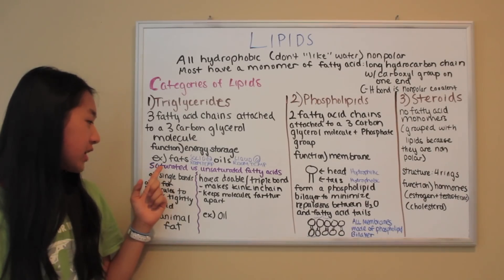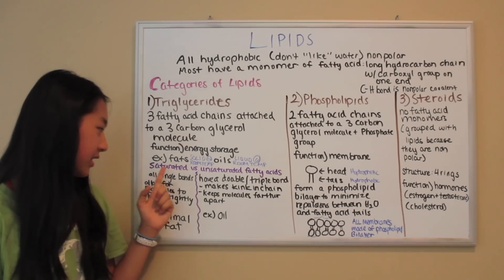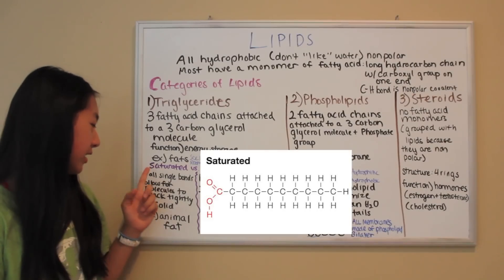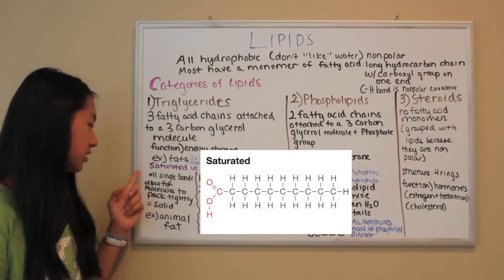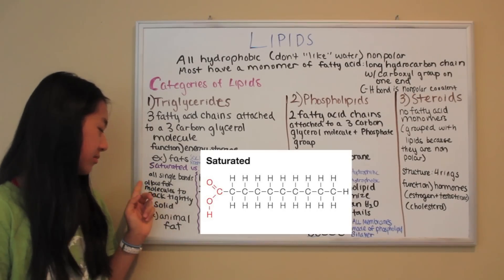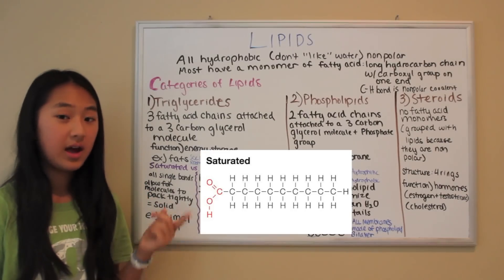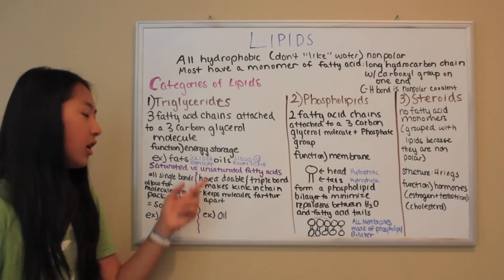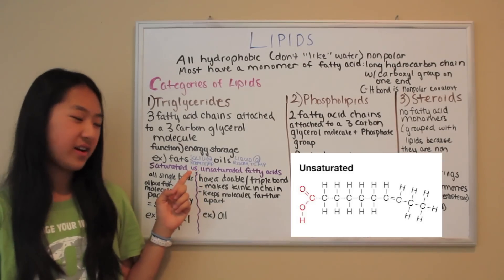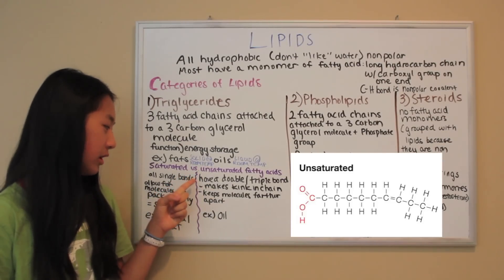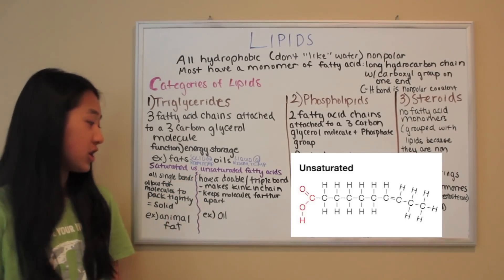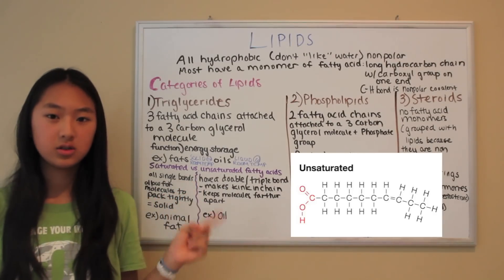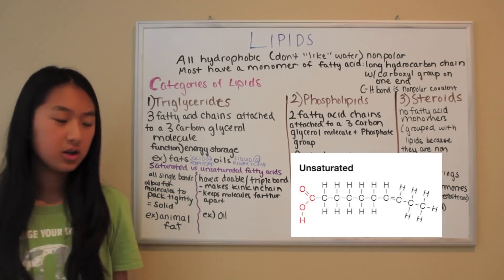There are two types of fatty acids: saturated fatty acids and unsaturated fatty acids. Saturated fatty acids are all single bonds, which allow molecules to pack tightly, so they are solid, such as animal fat. Unsaturated fatty acids have a double or triple bond in their chain, which makes a kink in the chain and keeps the molecules farther apart, so they're liquid, such as oil.